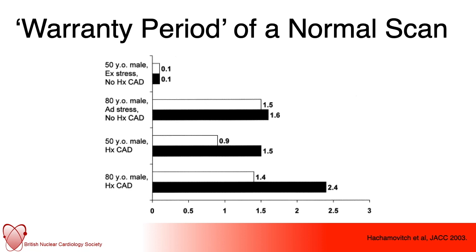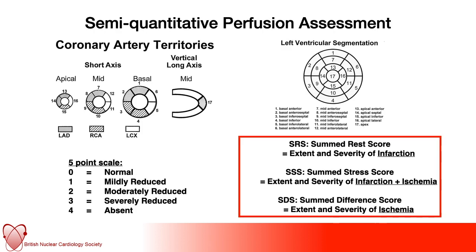It's important to have an appreciation for the warranty period of a normal scan, given that we frequently see patients back in clinic a year or two later with similar symptoms. This very much depends on the patient in front of you. If you have a 50-year-old gentleman who managed an exercise stress MPS with no history of coronary disease, not diabetic, no CKD, then you can be incredibly reassured — the event rates at one and two years are very low. That changes as patients get older or have a history of coronary artery disease, diabetes, CKD, or inability to exercise — risks are still low but not quite as reassuring.